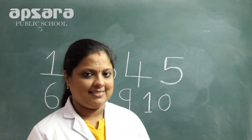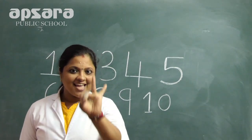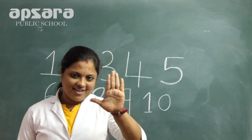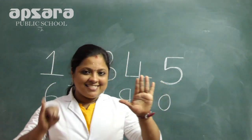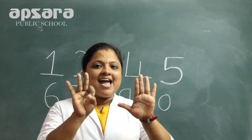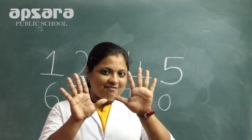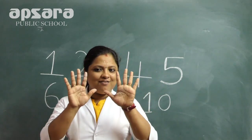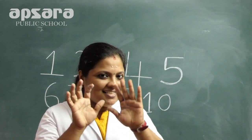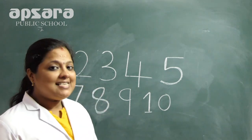Can you count? Yes — 1, 2, 3, 4, 5, 6, 7, 8, 9, 10. How many fingers do you have? Now you can say — you have 10 fingers. We learned how to write 1 to 10.